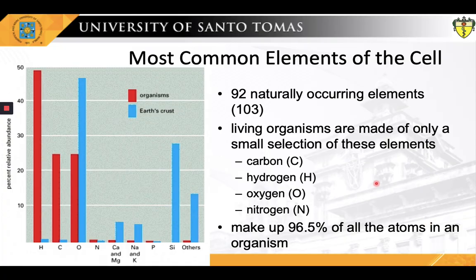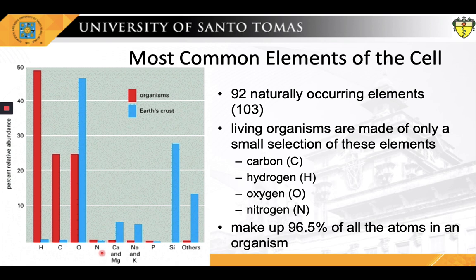All living cells are composed of a set of elements. There are around 92 naturally occurring elements, but in biological organisms only a number of elements play important roles. The major constituents of most biomolecules, comprising 96.5 percent of all atoms in an organism, are carbon, oxygen, hydrogen, and nitrogen. Hydrogen is the most abundant element, comprising almost 50 percent of all atoms in a biological organism. Carbon and oxygen each make up almost 25 percent, while nitrogen comes a far fourth.